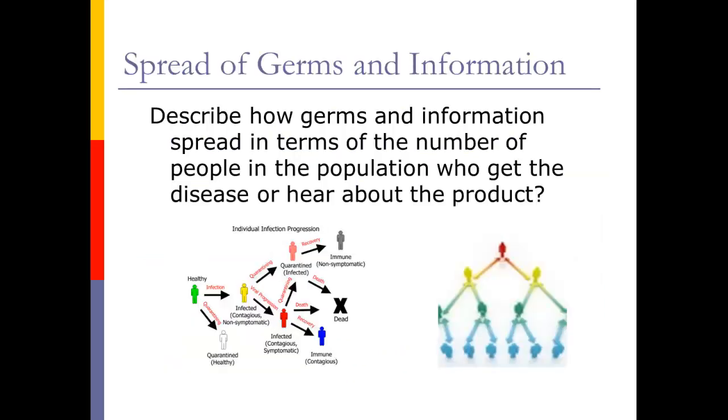Let's think about this for a minute. How do germs and information spread in terms of the people in the population? Basically, you have a healthy person gets infected and then starts meeting with people, talking with people, interacting, and start spreading it to a couple people and then they start spreading it.